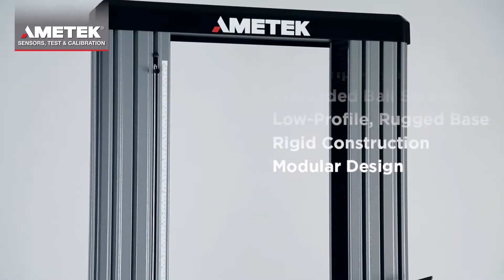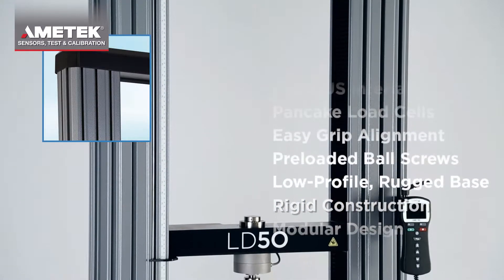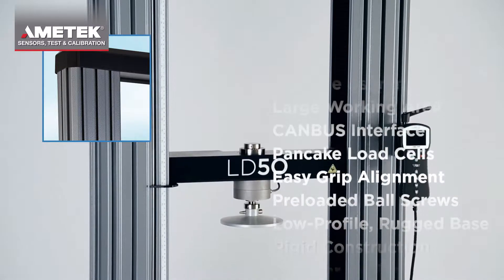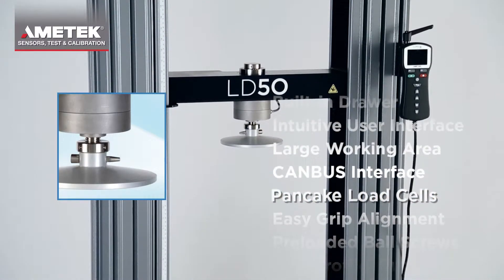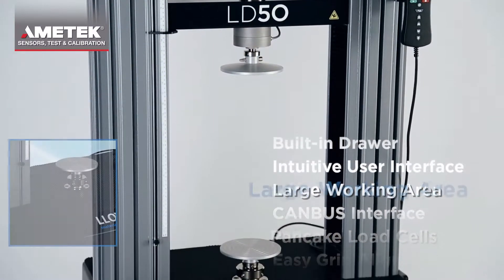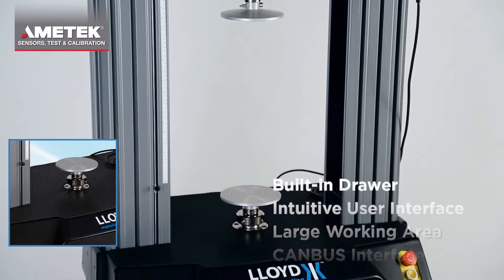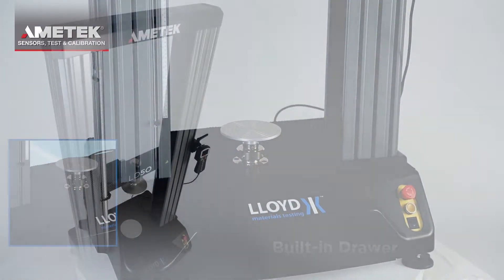A high-stiffness dual-column frame helps prevent frame deflection and cross-head movement. Pancake load cells improve accuracy while providing a large working area and the flexibility to test small, medium, large, and heavy-duty samples.